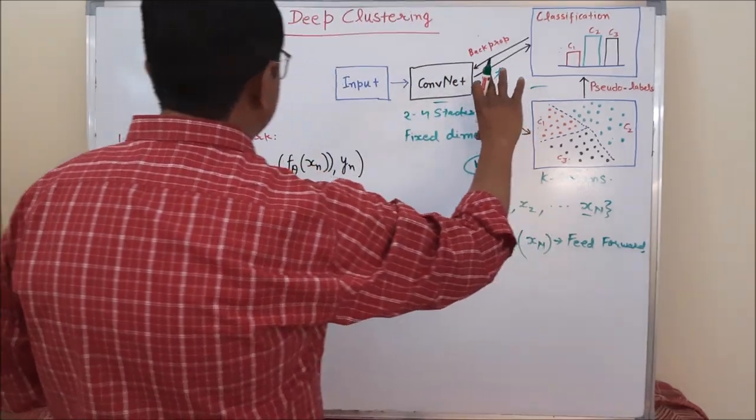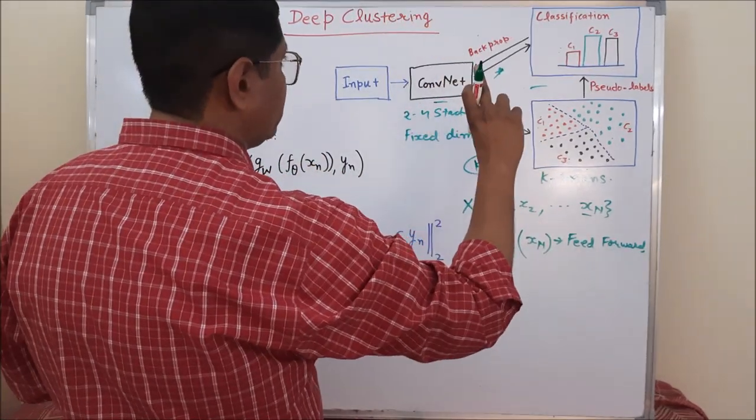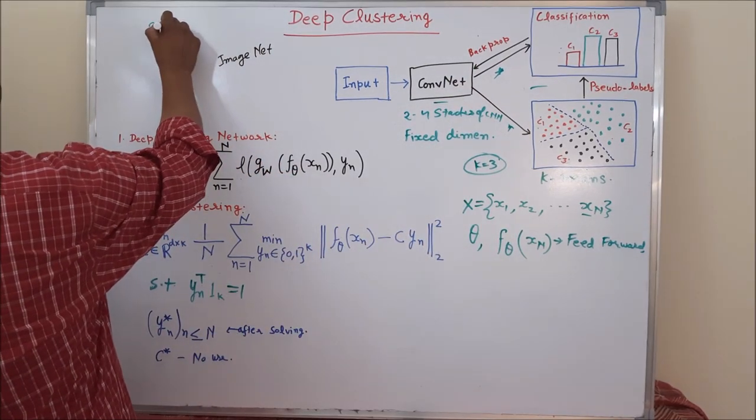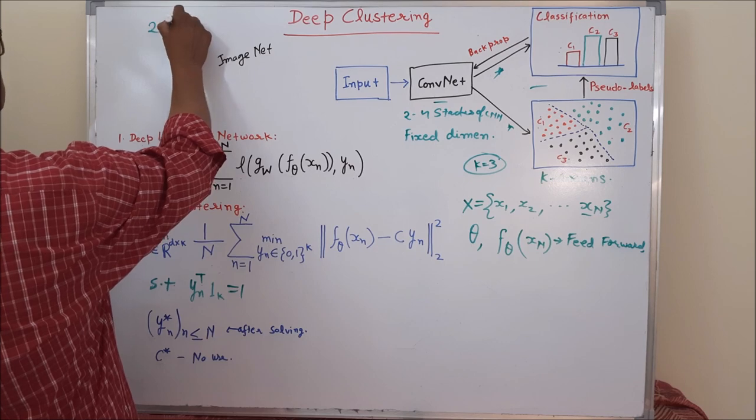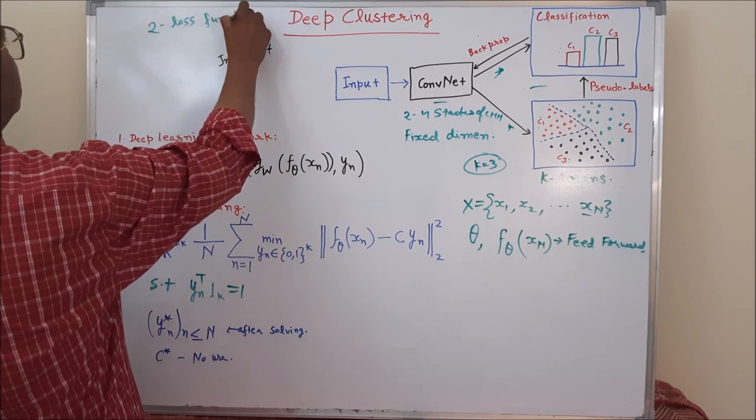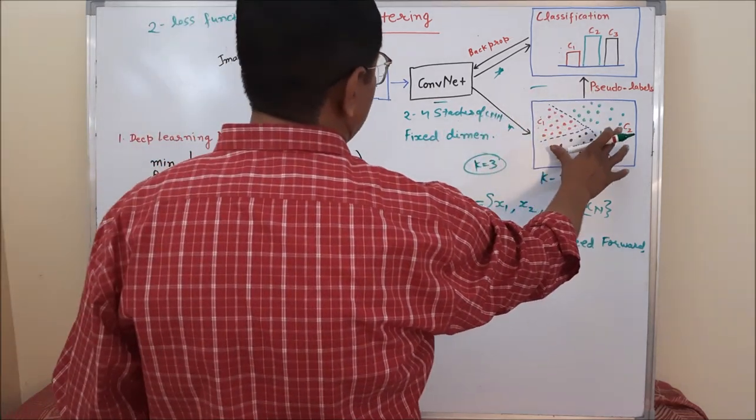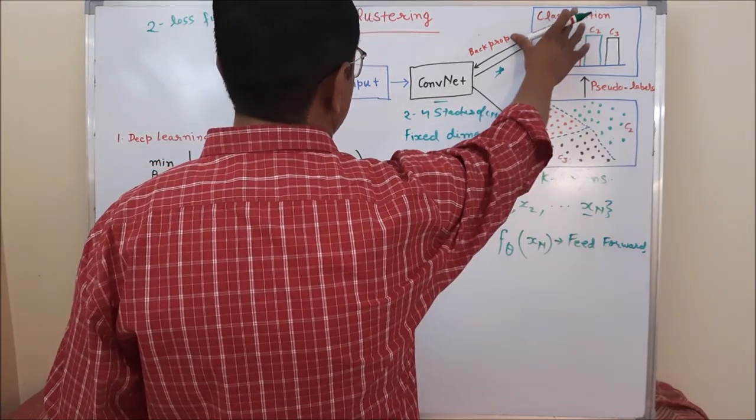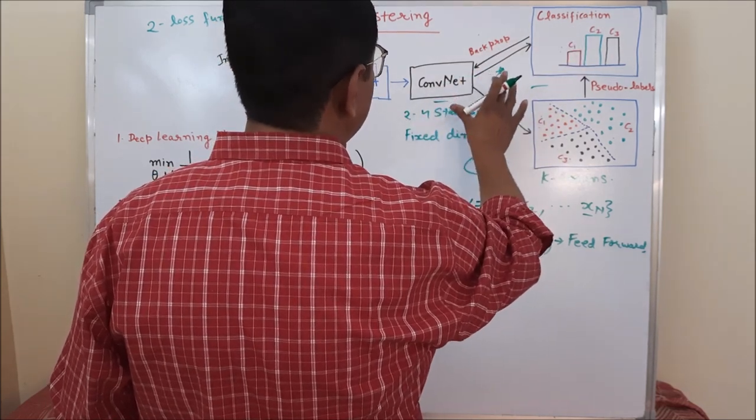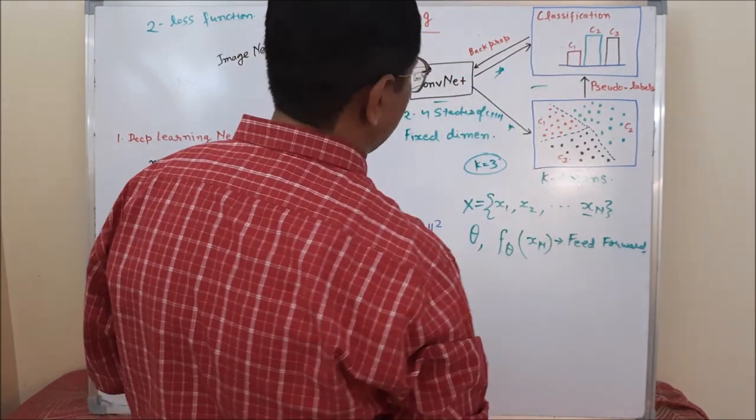So in summary we can say that it is very important that all such kind of architectures, we use two different loss functions. One loss function for unsupervised labeling, one loss function for network deep learning network which use those unsupervised labeling.